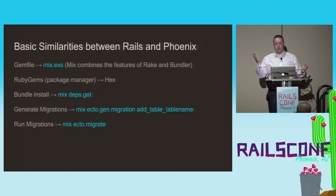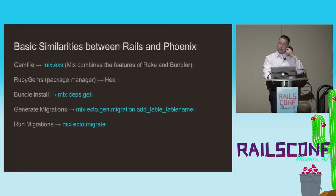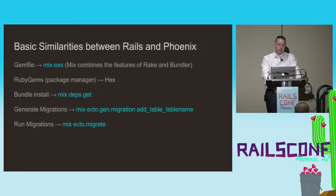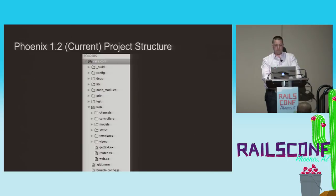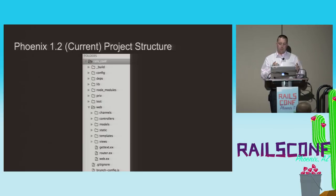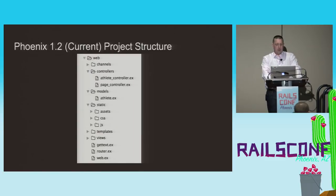Looking at a Rails project versus a Phoenix project, there are a number of similarities in how they're used. The Mix module in Elixir combines the role of Bundler and Rake, and can generate migrations. There are a number of code generators — you can generate an application, controllers, views, et cetera. Unlike Rails, Phoenix requires you to explicitly define your pluralizations. A Phoenix project is reasonably similar to a Rails project in structure. The underscore-build folder contains compiled project files, the deps folder contains dependencies, priv contains static files and migrations, and the web folder is pretty similar to the app folder in a Rails project.